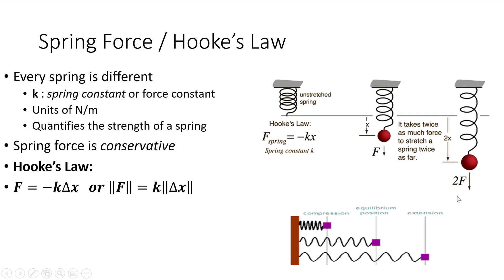Just as a recap, springs pull back when you stretch them, and the force that they pull back with is proportional to their displacement. The equation is force equals negative k delta x, where k is the spring constant and delta x is the displacement. This is called Hooke's Law.